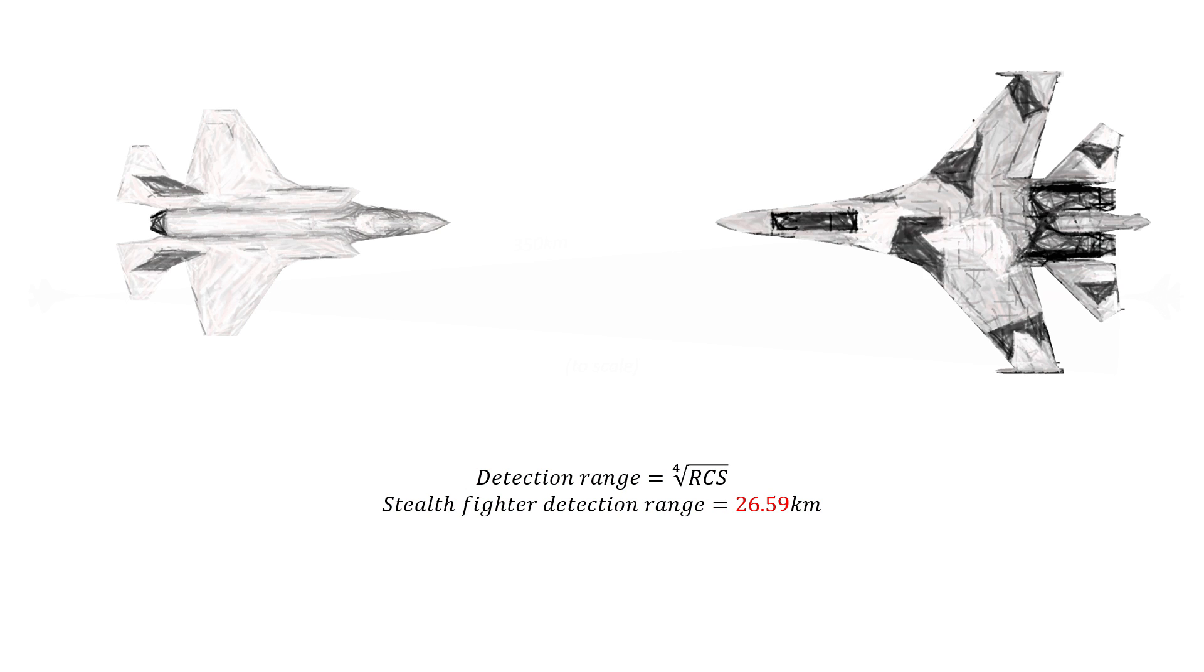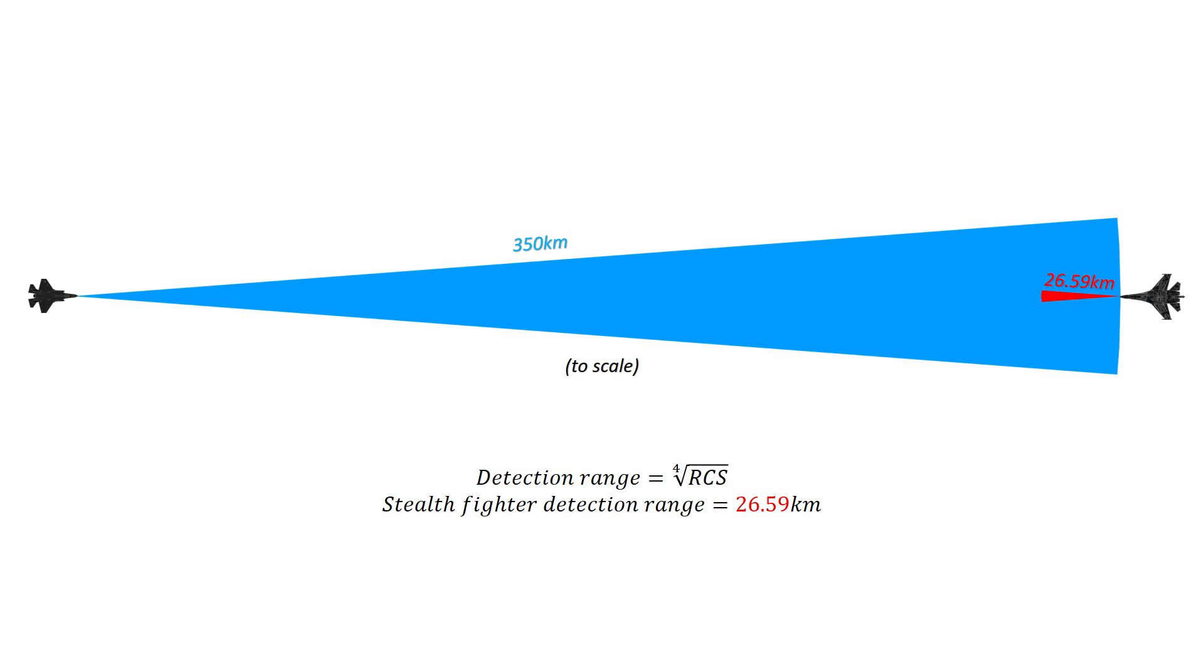The answer in this scenario is 26.59 kilometers, which is more than 10 times shorter than the detection range for the three square meter target. Visualizing this, we can see that if both jets were equipped with exactly the same radar, the stealth fighter would detect the Su-35 well in advance.